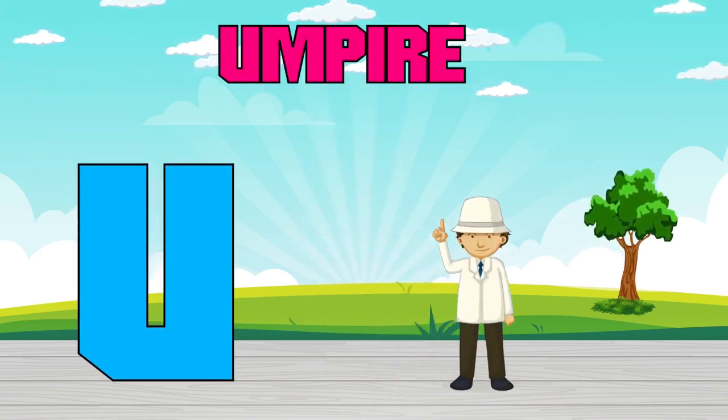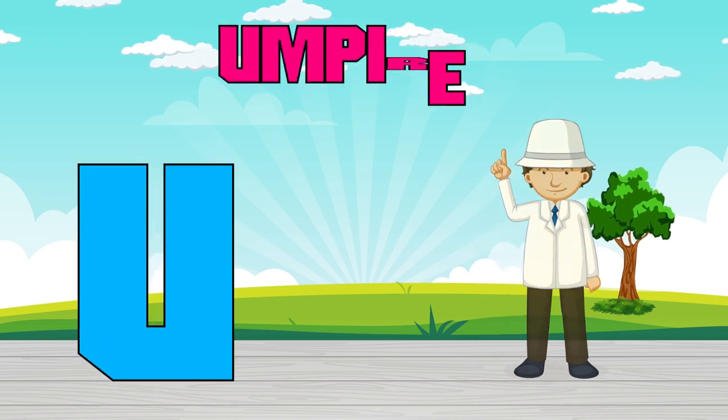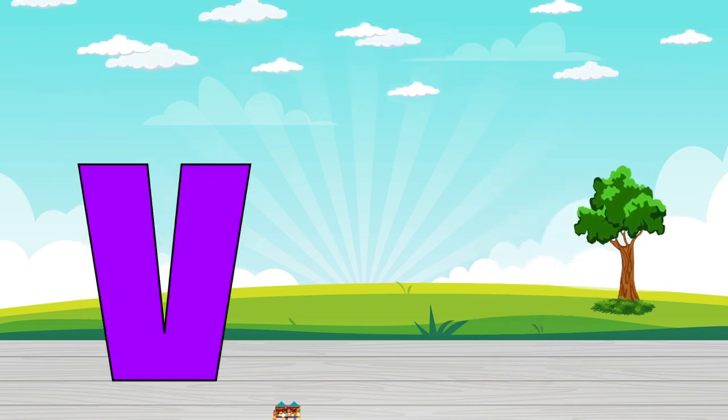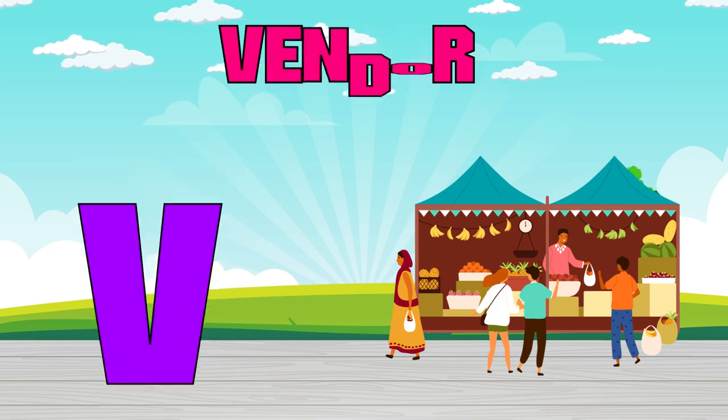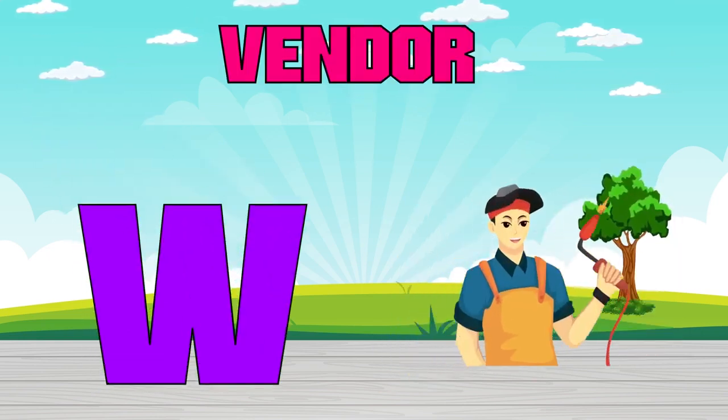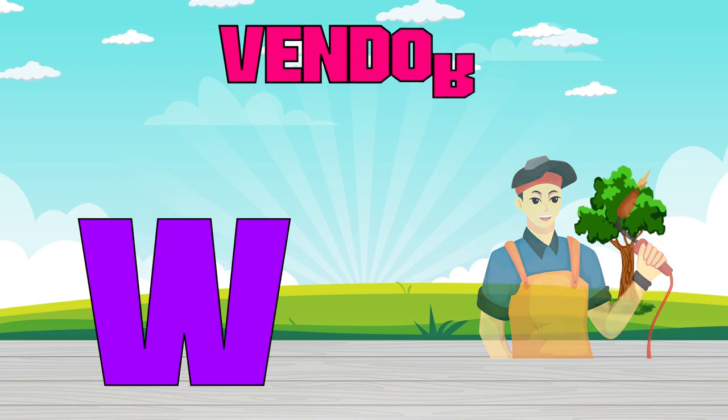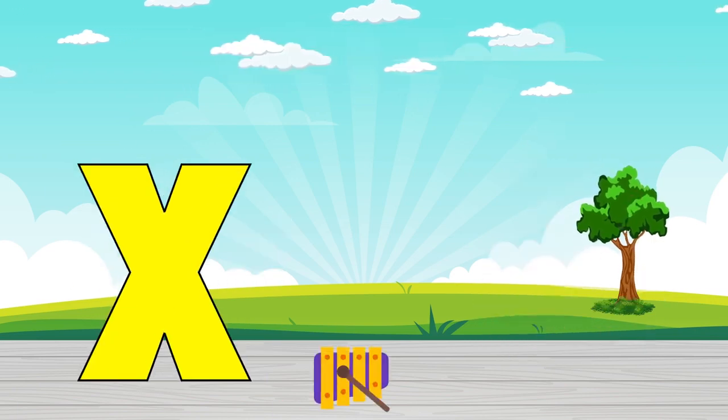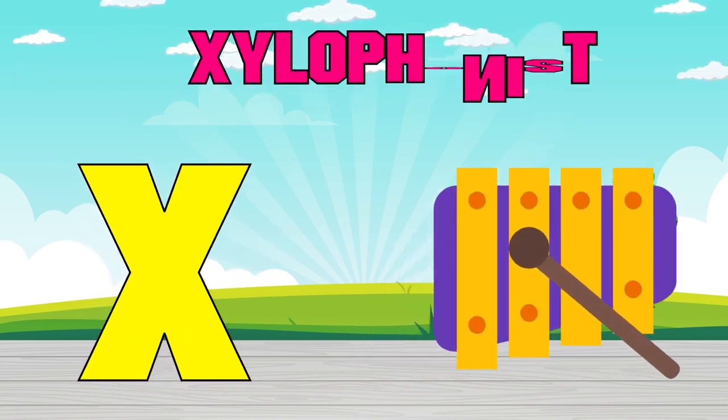U is for umpire, u, u, umpire. V is for vendor, v, v, vendor. W is for welder, w, w, welder. X is for xylophonist, x, x, xylophonist.